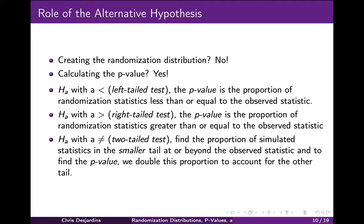What exactly is the role of the alternative hypothesis? It was not used to create the randomization distribution — only the null hypothesis was used. It was used to calculate the p-value: the alternative hypothesis determines what we mean by 'as extreme or more' and tells us which tail to use. When the alternative contains a less than sign, this is a left-tailed test, and we calculate the p-value as the proportion of randomization statistics less than or equal to the observed statistic. When it contains a greater than sign, this is a right-tailed test, using the proportion greater than or equal to the observed statistic. When it contains a not equal to sign, this is a two-tailed test, and we double the proportion in the smaller tail.